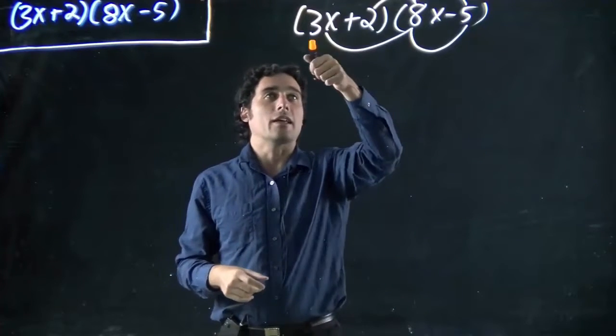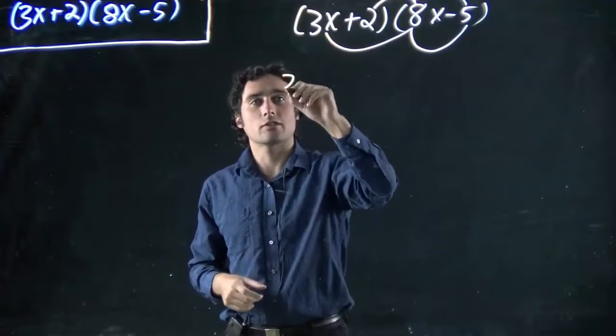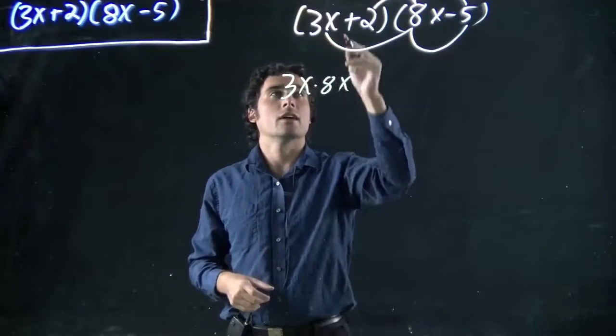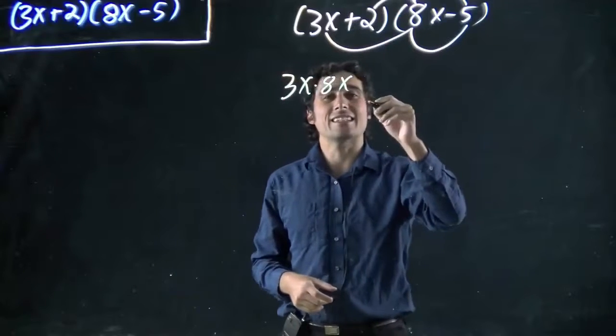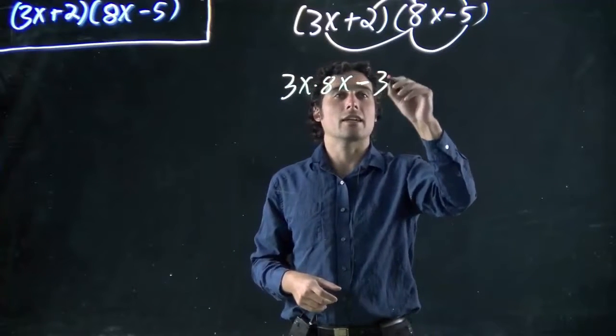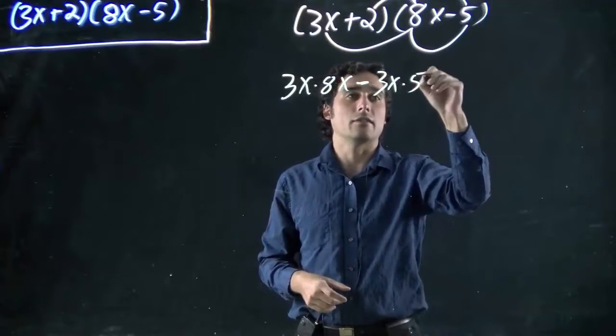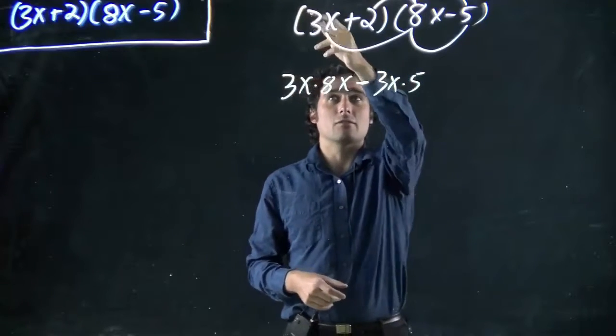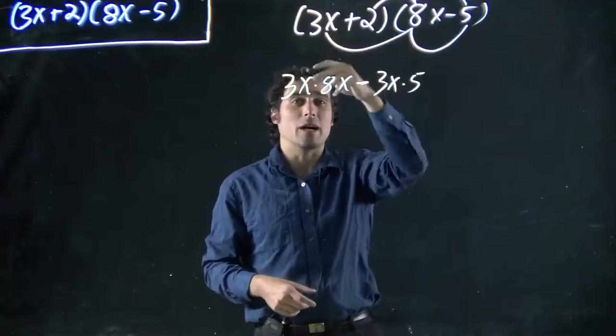So what do we got? 3x times 8x. Oh, let's write that out. 3x times 8x, and then 3x times minus 5. So that's going to mean a minus here, and 3x times 5. Because minus, and we can think there's a plus in front of that, minus and plus mean minus.